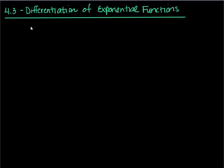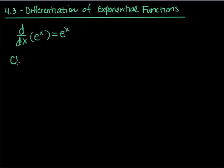So in 4.3 today, we are going to chat a little bit more about the derivative of e. We've already seen what happens with e, and in the last section we talked about how the derivative of just e to the x itself — this is the best derivative because it's so easy — the derivative of e to the x is just e to the x. So now we want to look at what happens if I raise e to something other than just x. Basically, we're going to look at the chain rule for the exponential function e.